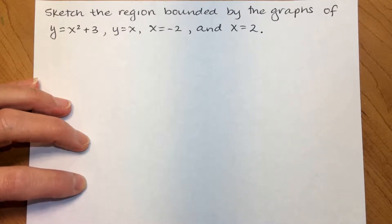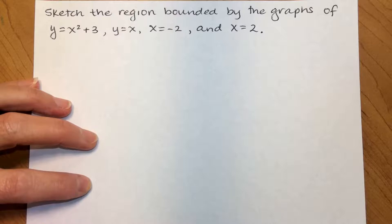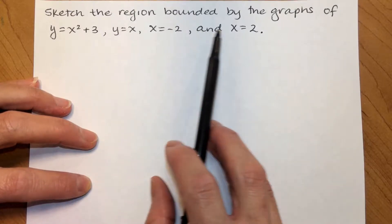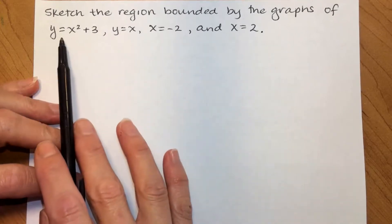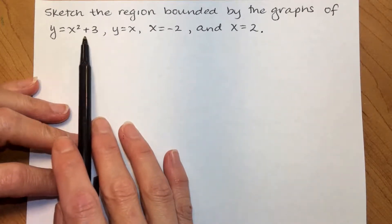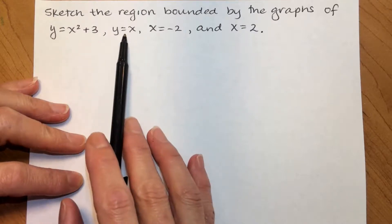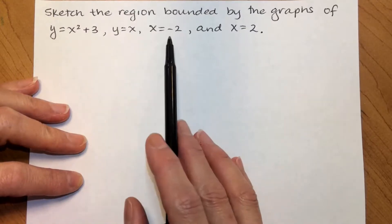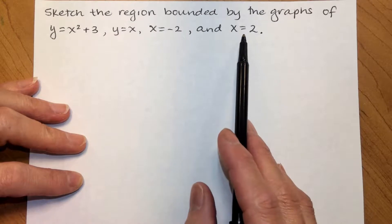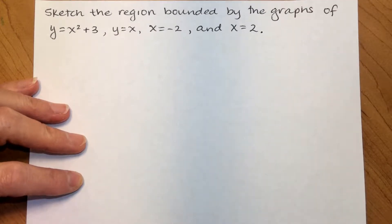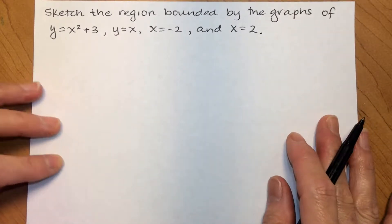This video is going to look at how to find the area of a bounded region. So we are going to sketch the region bounded by the graphs of y equals x squared plus 3, a parabola shifted 3 units up, y equals x, x equals negative 2, and x equals 2. And then we're going to find the area of that region.